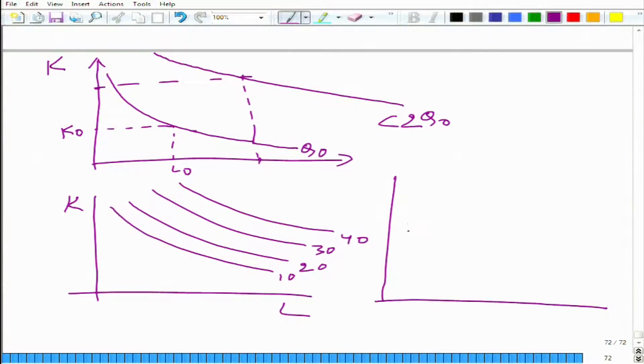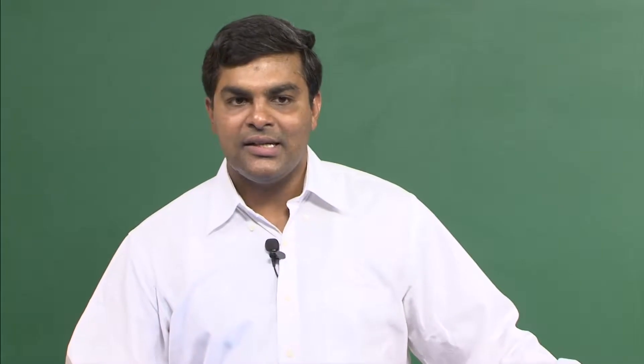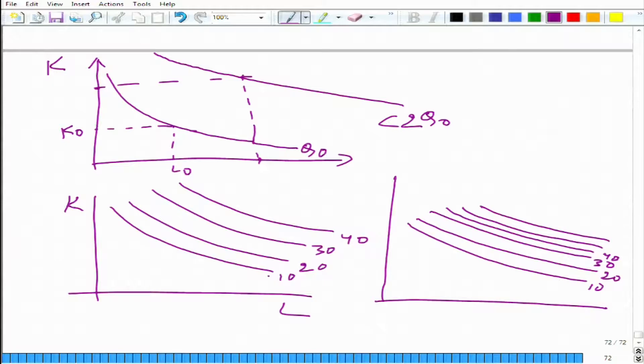what will we get with increasing return to scale? The isoquants will become nearer for the same values 10, 20, 30, 40. They will become nearer and nearer. Why? Because if we double all the inputs, then output will more than double. Here we are taking isoquants for quantity 10, then 20, then 30, then 40.